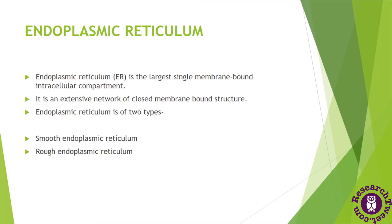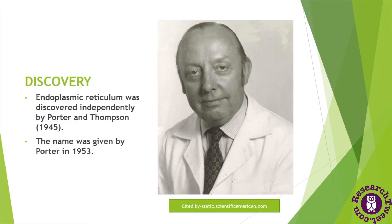The endoplasmic reticulum is basically of two types: smooth endoplasmic reticulum and rough endoplasmic reticulum. The endoplasmic reticulum was first discovered by Porter and Thompson independently in 1945, and the name 'endoplasmic reticulum' was given by Porter in 1953. Here is a diagram of Porter, the discoverer of the endoplasmic reticulum.